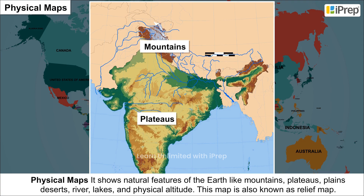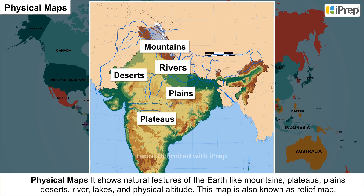Physical Maps show natural features of the Earth like mountains, plateaus, plains, deserts, rivers, lakes, and physical altitude. This map is also known as a Relief Map.